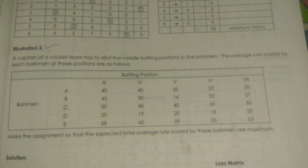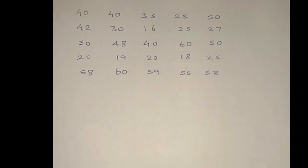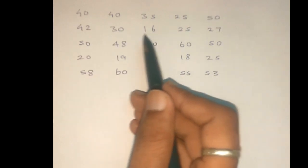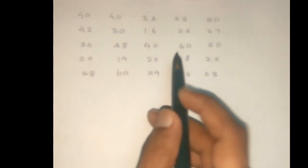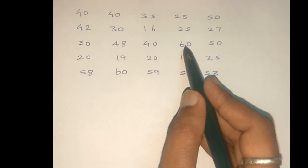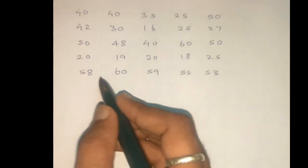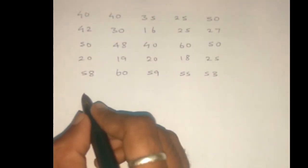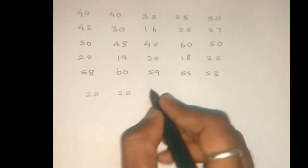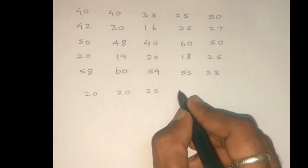Now we will see how to solve this problem. If you look at all the numbers, the maximum number is 60. We have numbers like 60, 40, 20; 60, 35, 25; 60, 25, 35.